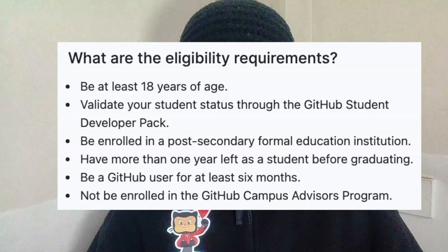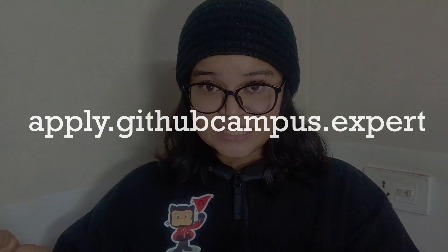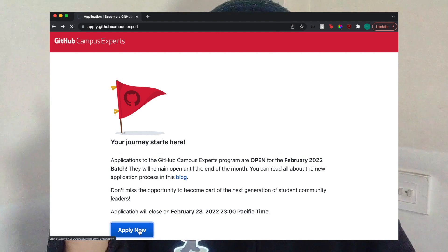Now that we've covered what the GitHub Campus Expert program is and who it is for, let's get to the application process. There are a few prerequisites to apply. If you match all of them, you go to application.github.expert and click Apply Now. The application opens twice a year — once in February, which is currently open, and once around August-September. For exact dates and deadlines, follow GitHub Education on Twitter. After clicking Apply Now, you sign in through your GitHub account and authorize Campus Experts to your account.